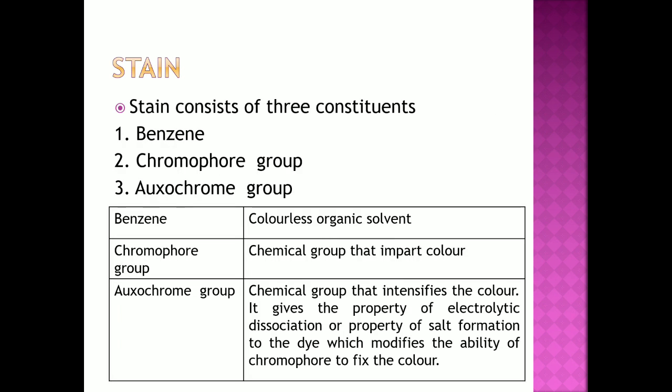Stain consists of three constituents: benzene ring, chromophore group, and oxochrome group. Benzene is a colorless organic solvent. Chromophore group is a chemical group that imparts color. Oxochrome group is a chemical group that intensifies the color. It gives the property of electrolytic dissociation or salt formation to the dye, which modifies the ability of the chromophore to fix the color.